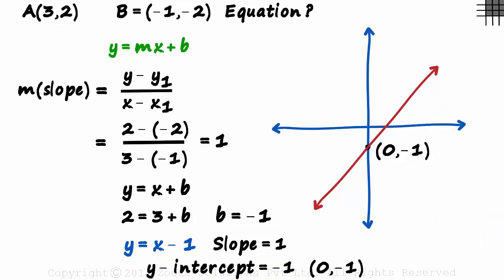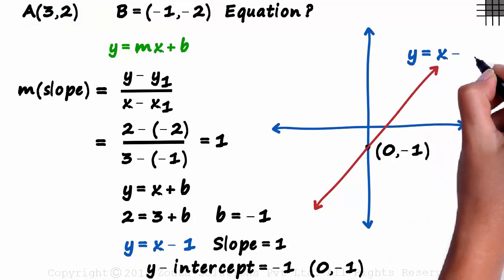An easier way of course, would have been to plot points A and B and then draw a line passing through them. Anyway, so the equation of the line is Y is equal to X minus one.